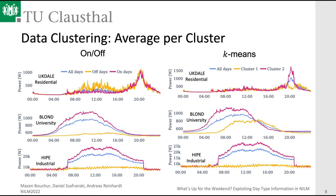The blue line represents the total energy consumption across all days. For BLOND, the two clustering methods agree to some degree: both identify a high-consumption cluster (cluster 2, also the majority in k-means). However, they disagree on the off-days cluster — with the on/off method, the off-days energy consumption is nearly non-existent compared to on days, while k-means picks a cluster with somewhat higher consumption, likely mixing in some on days.